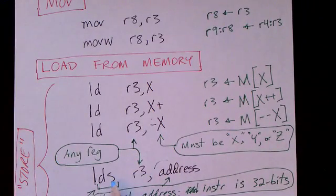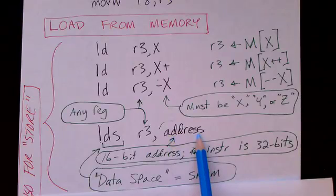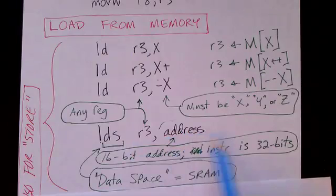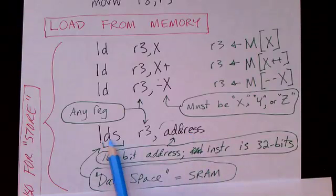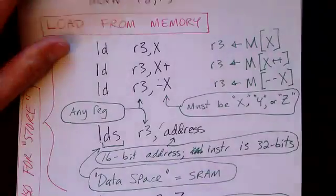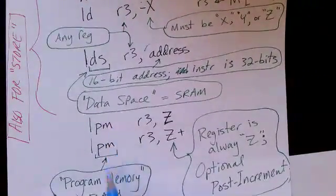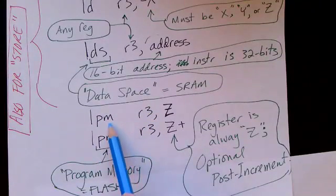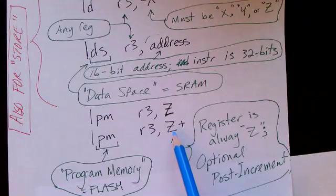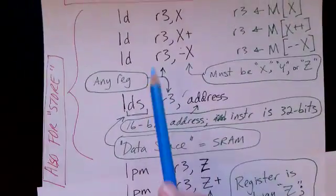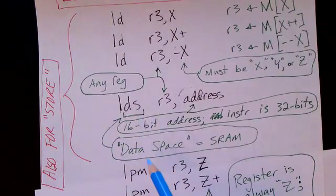There is also a load instruction that provides a full 16-bit address. Since instructions are normally 16 bits in length, this is one of the 32-bit instructions because we need the extra 16 bits for the address. This loads from data space — what they call the static RAM. There are also instructions that allow you to load from flash memory; if data is stored in flash you can load it using load-from-program-memory instructions. In that case you must use the Z register to hold the address. In addition to loading from data space, there are analogous store instructions for writing into data space.